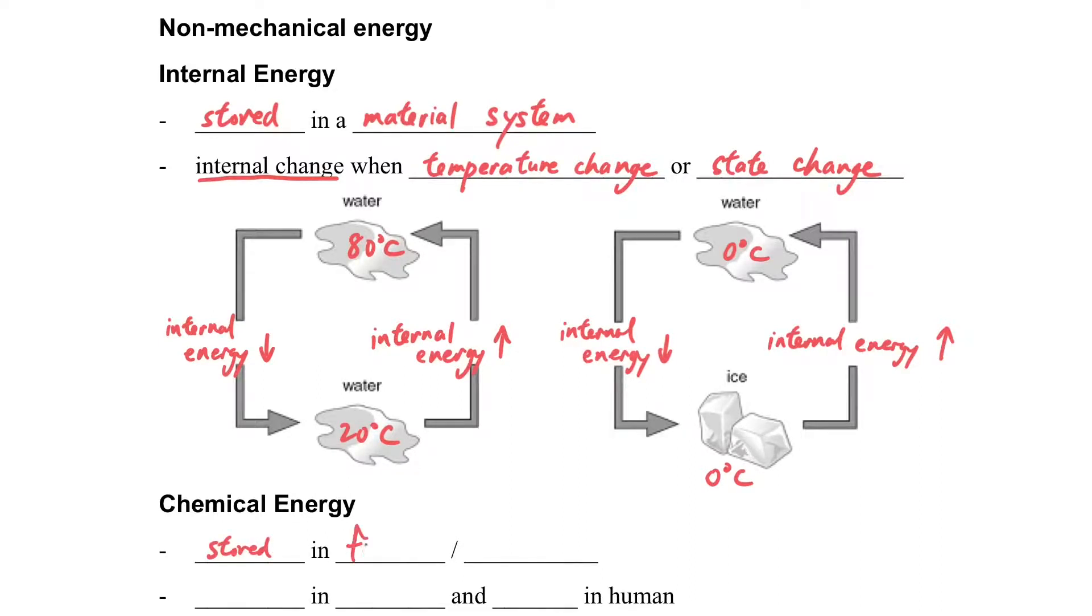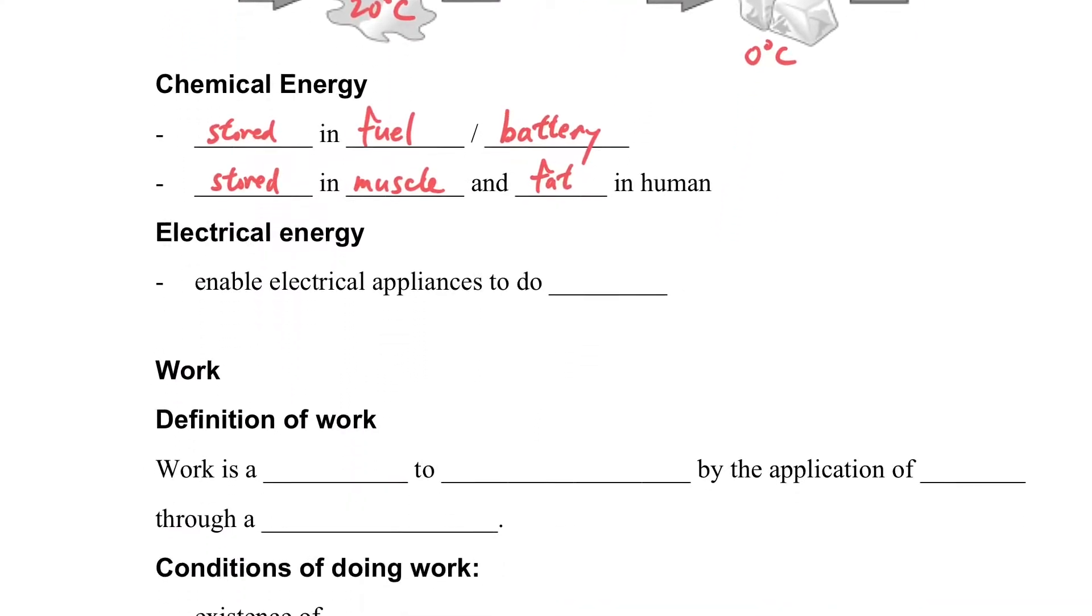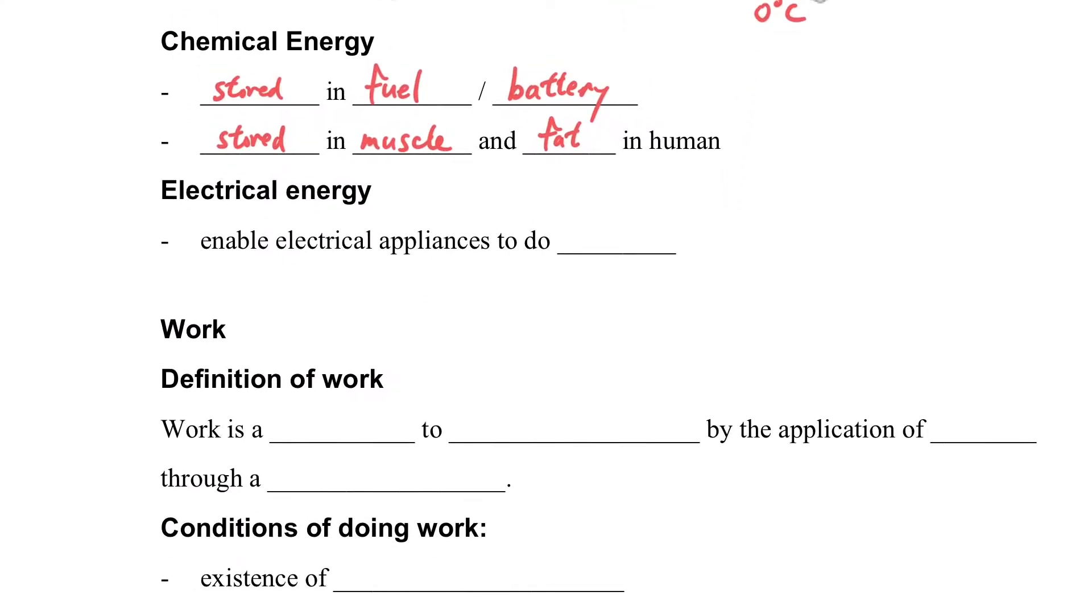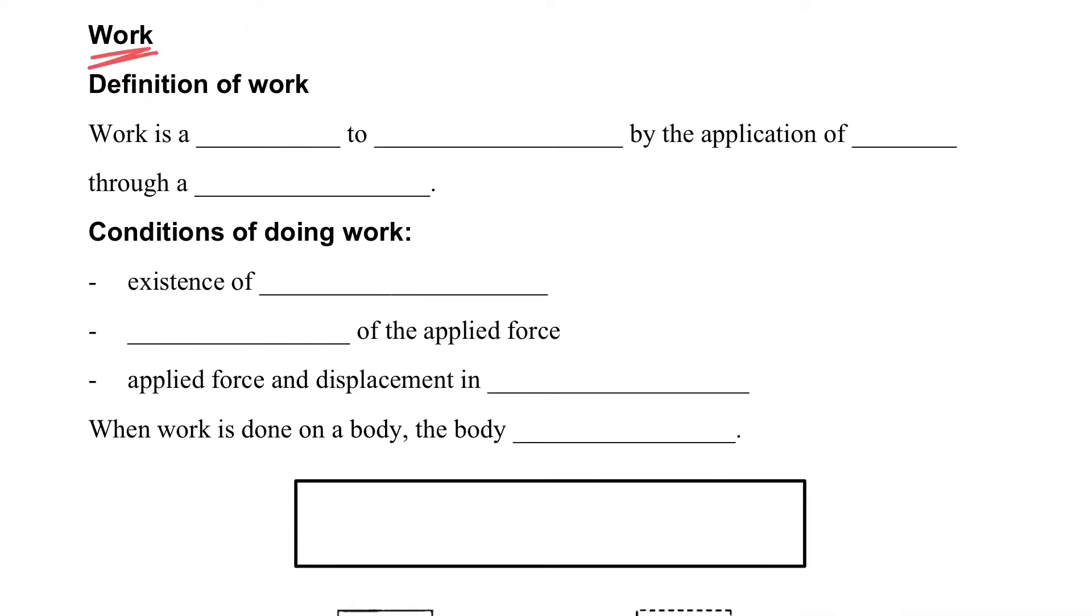And also chemical energy is stored in fuel or battery. And sometimes, if we are doing sports, then the energy can also be stored in the muscle or fat in the human. We also have electrical energy, which enables electrical apparatus to do work.